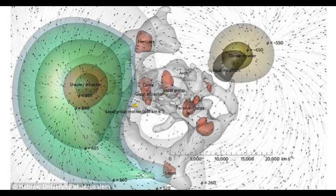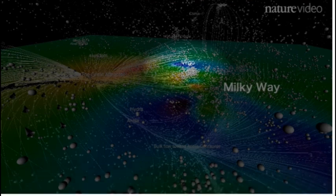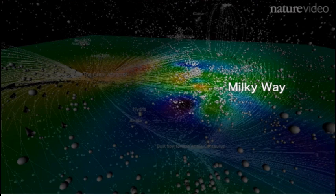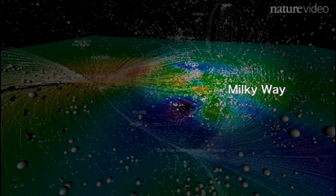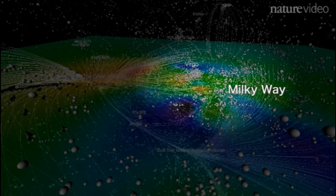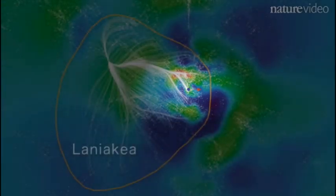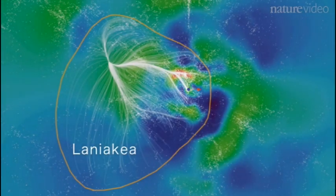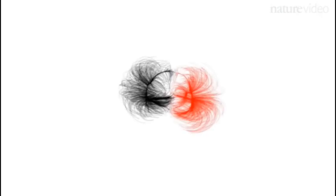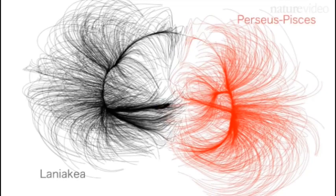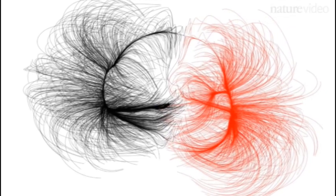But what is propelling the Milky Way's race through space? Exciting new research shows that our galaxy is not being pulled, but also pushed. In a new study in the forthcoming issue of Nature Astronomy, researchers describe a previously unknown very large region in our extragalactic neighborhood, largely devoid of galaxies. This void exerts a repelling force on our local group of galaxies. Because it repels rather than attracts, we call this region the dipole repeller. In addition to being pulled towards the known Shapley concentration, we are also being pushed away from the newly discovered dipole repeller.